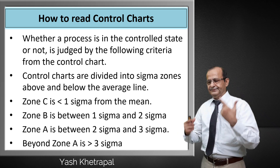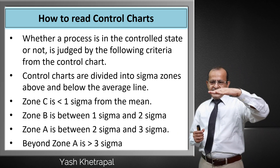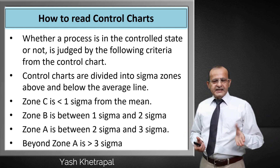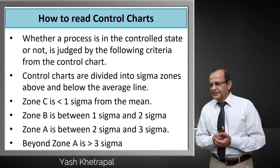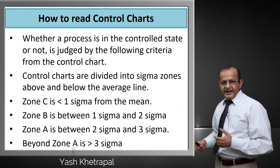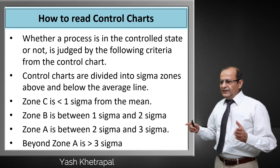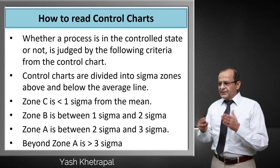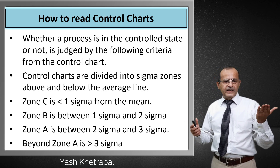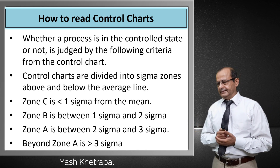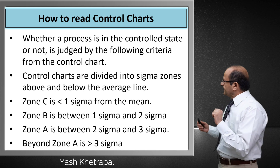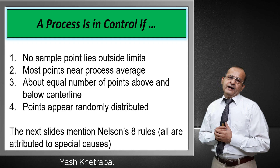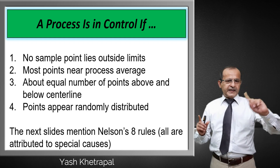The control chart has zones: Zone A, Zone B, and Zone C near the center line. Zone C is within 1 sigma, Zone B is between 1 to 2 sigma, and Zone A is between 2 to 3 sigma — 3 standard deviations. Beyond Zone A is above 3 sigma, 3 process standard deviations. Now, how do we say a process is in control? No sample point lies outside Zone A beyond 3 sigma, most points are near the center, the distribution is equal and random, with no trend or unusual shape.